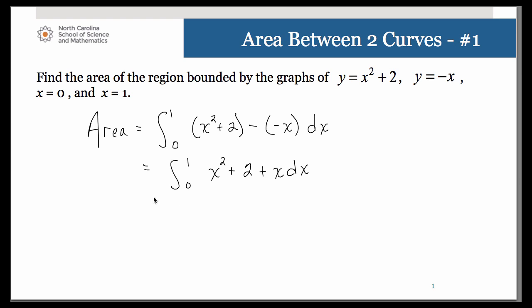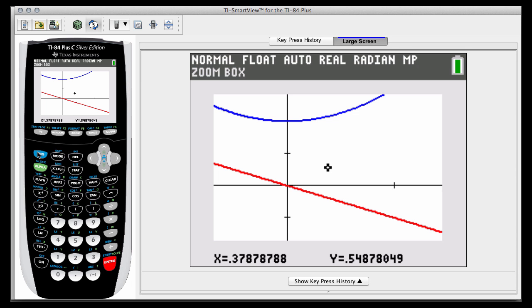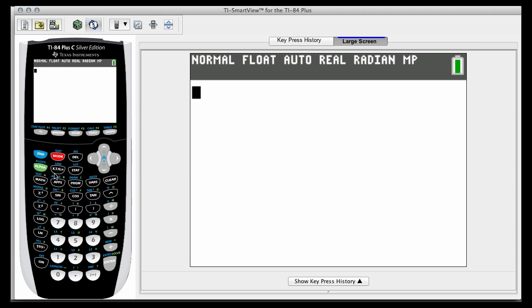You could go ahead and do your anti-derivative, which would be evaluated from 0 to 1. You can then use your graphing calculator to do the evaluation, so let's go back and go ahead and do that to give you some practice.